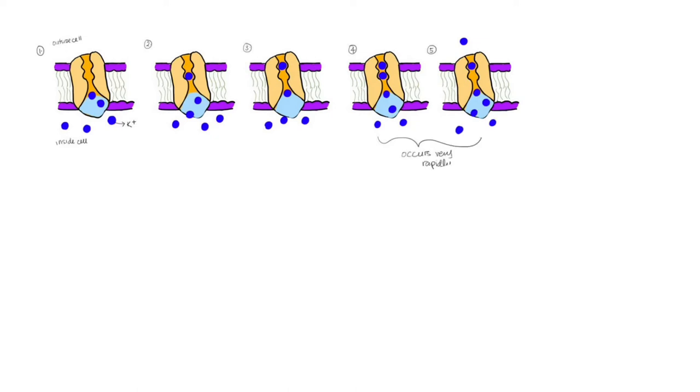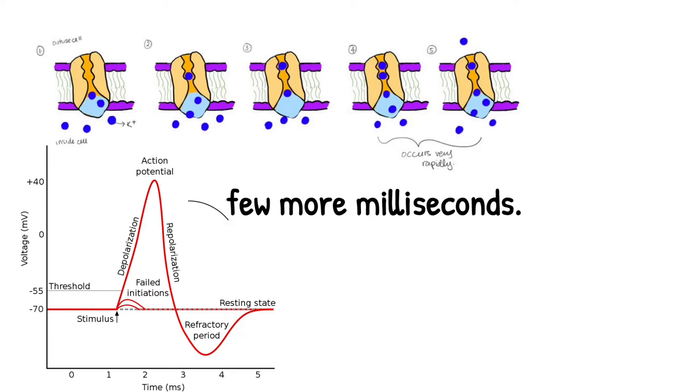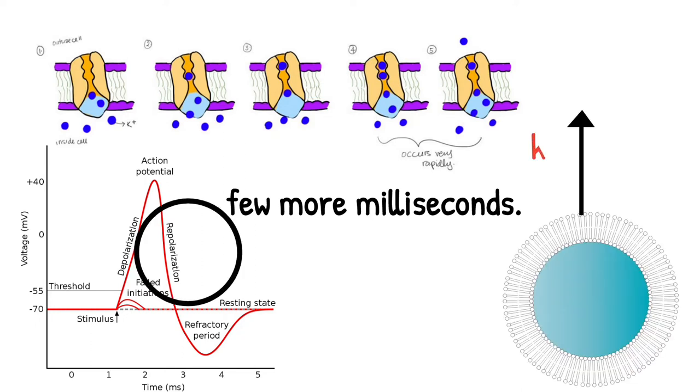Unlike the Na+ channel, the K+ channels remain open for longer duration. These channels remain open for a few more milliseconds after completion of repolarization. It causes efflux of more number of K+ producing more negativity inside. It is the cause for hyperpolarization.